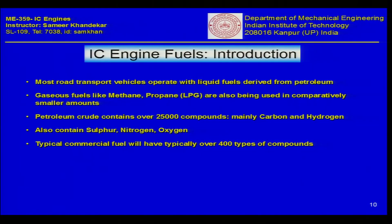Most road transport vehicles operate on liquid fuels derived from petroleum. Gaseous fuels like methane and propane are also being used in comparatively small amounts, but usage is increasing. Several large transport systems, such as those in Delhi and metropolitan cities, are now CNG (compressed natural gas) based, and there are definite advantages of going to gas as compared to liquid fuels.